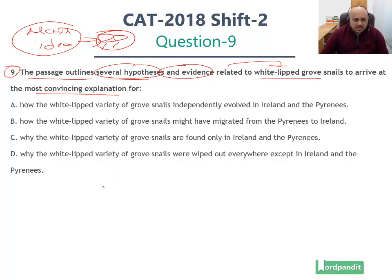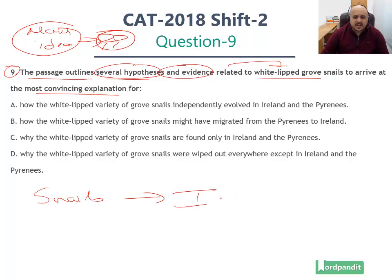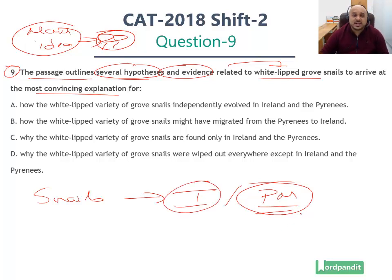If you remember the primary content of the passage, the passage is about one thing: effectively showcasing how these white-lipped groove snails are present in Ireland as well as the Pyrenees Mountains, and these are genetically similar snails — there is no genetic variation between these two. How did that happen? That is the question.